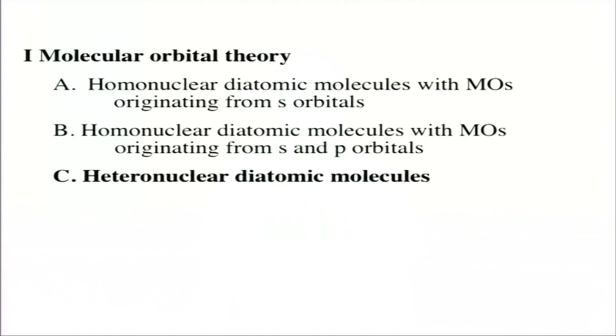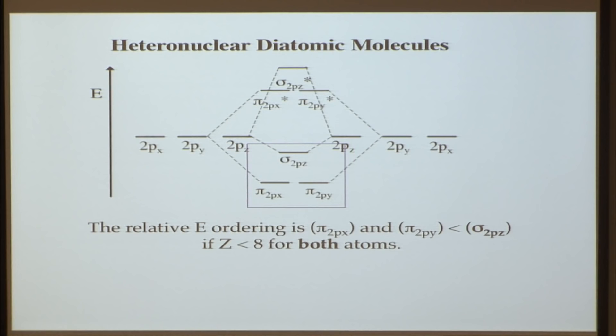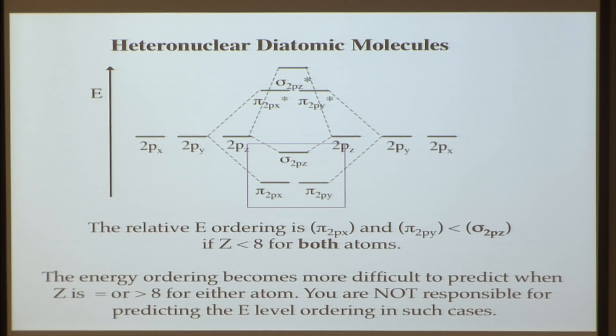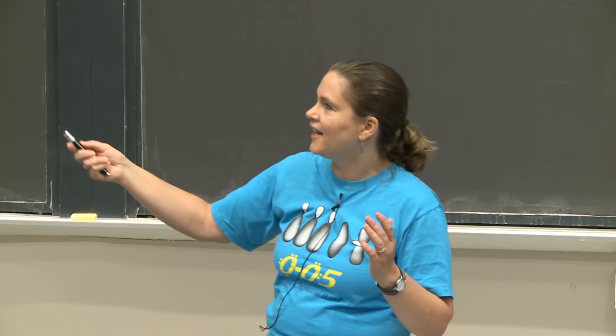Finally, you can also be asked to draw MO diagrams where both atoms are not the same. The rule: if Z is less than 8 for both atoms, pi comes first. If Z is not less than 8 for both atoms, the ordering is more complex and you won't be expected to determine it without additional information. Just worry about the case where Z is less than 8 for both.